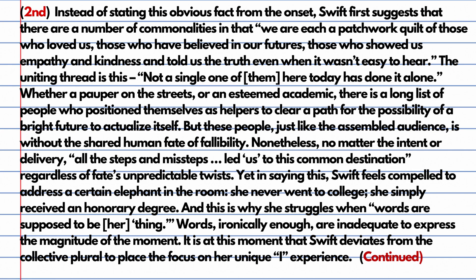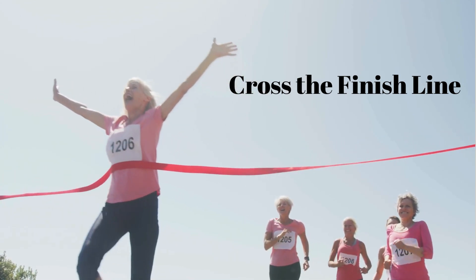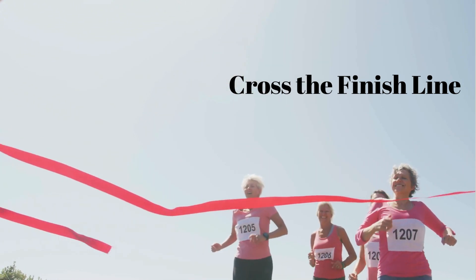Now I need textual support for the analysis of the ethos. This is why she struggles when words are supposed to be her thing — words, ironically enough, are inadequate to express the magnitude of the moment. It is at this moment that Swift deviates from the collective plural to place the focus on her unique 'I' experience. But I'm not done — I've got enough support and analysis for everything I promised in the first premise, but I've got to wrap this syllogism up across the finish line.